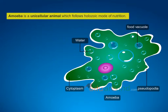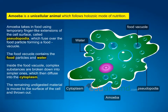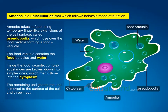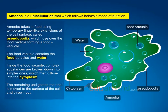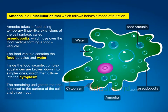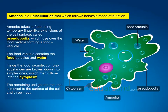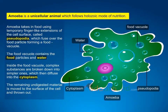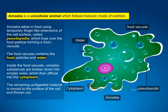Amoeba is a unicellular animal which follows holozoic mode of nutrition. Amoeba takes in food using temporary finger-like extensions of the cell surface called pseudopodia, which fuse over the food particle, forming a food vacuole. The food vacuole contains the food particles and water. Inside the food vacuole, complex substances are broken down into simpler ones, which then diffuse into the cytoplasm. The remaining undigested material is moved to the surface of the cell and thrown out.